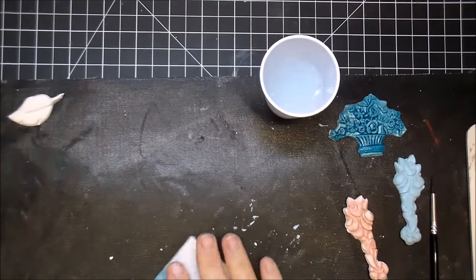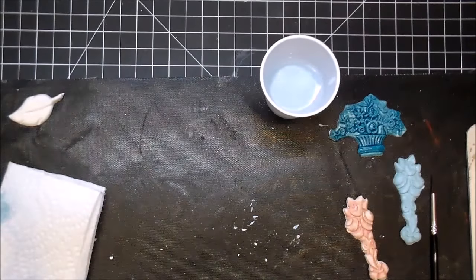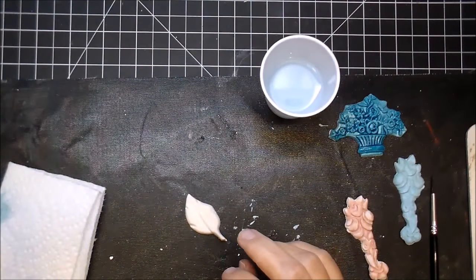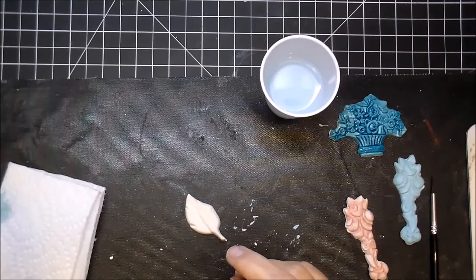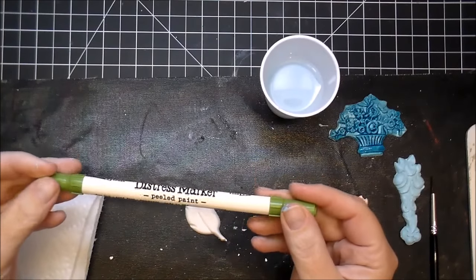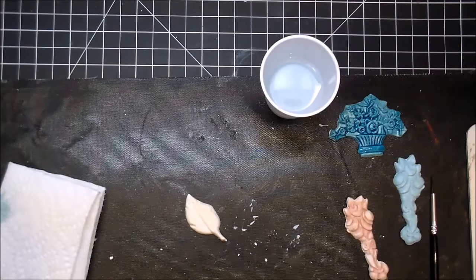Also, I'd like to show you that you can use, I have a leaf here. Let me grab a distress marker. This is Peeled Paint Distress Marker. I'm just going to rub it on my craft mat here.